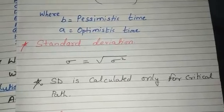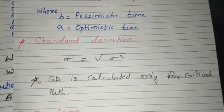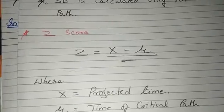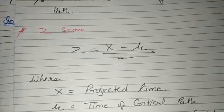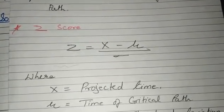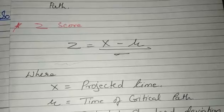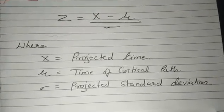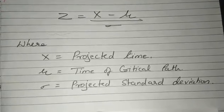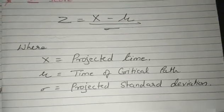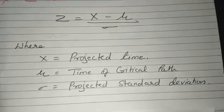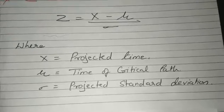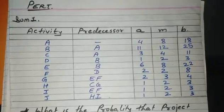But we have to see when we would be doing standard deviation. Standard deviation will only see the activities which are on critical path. A well-known formula is Z-score: Z = (X - μ) / σ, where X is projected time, μ is time of critical path, and standard deviation is projected standard deviation.